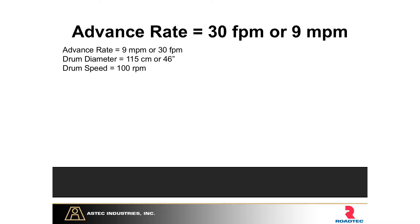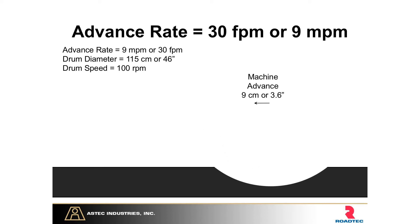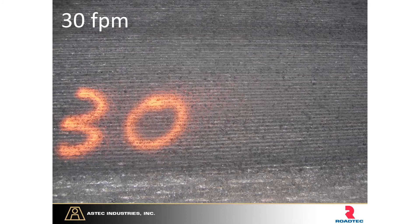Now we'll look at longitudinal smoothness — how we achieve a smooth milled surface and why at 30 feet per minute with a standard drum you can still get a smooth surface. We'll keep drum diameter and drum speed static for each example; all that changes is advance rate — how fast the machine moves down the road. At 30 feet per minute, in one rotation of the drum the machine advances 3.6 inches. That same tooth as it comes back around leaves a very small residual material — and at 30 feet per minute the lines are nice and straight.